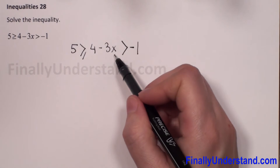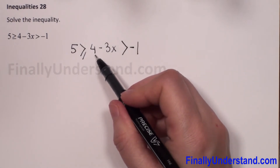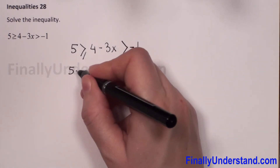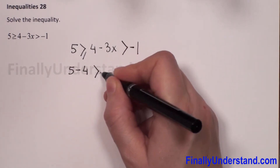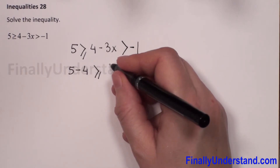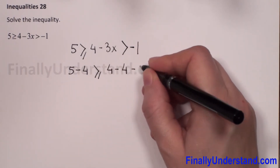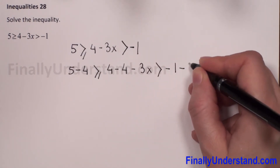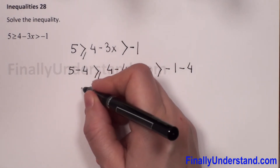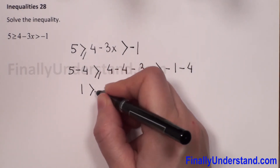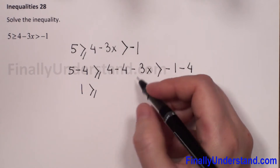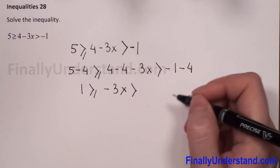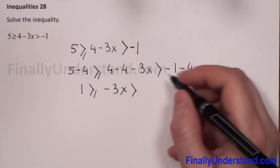To find x, I have to first subtract 4 from each member. So I have 5 minus 4 is greater than or equals 4 minus 4 minus 3x is greater than negative 1 minus 4. So 5 minus 4 is 1, and 4 minus 4 is 0, leaving negative 3x is greater than negative 5.